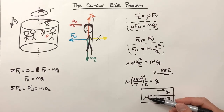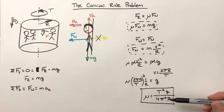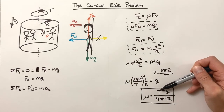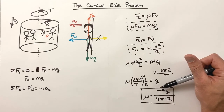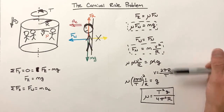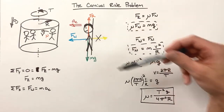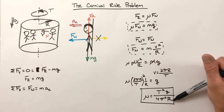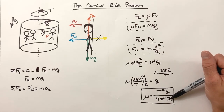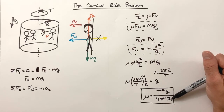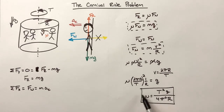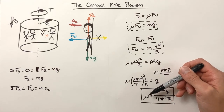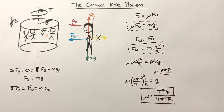This tells us how much friction must exist between a person and the wall to keep them from sliding downward. If the period goes up — the ride rotates slower — more friction is needed. Similarly, as g increases, more friction is needed. Interestingly, as the radius goes up, less friction is required. In practice, this tells us whether we can wear a polyester suit to the carnival and still ride. That's the carnival ride problem.